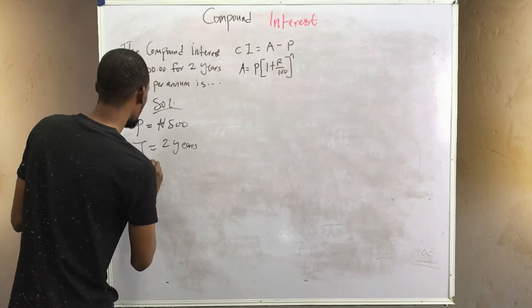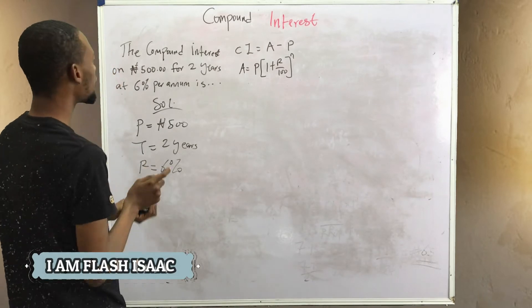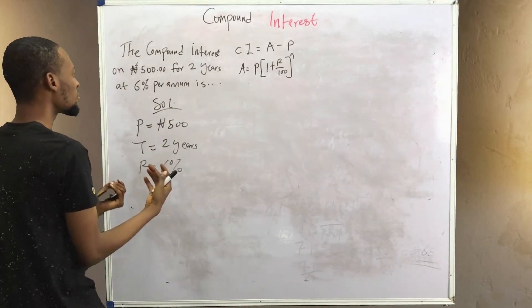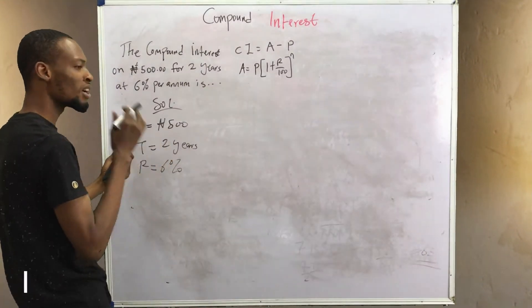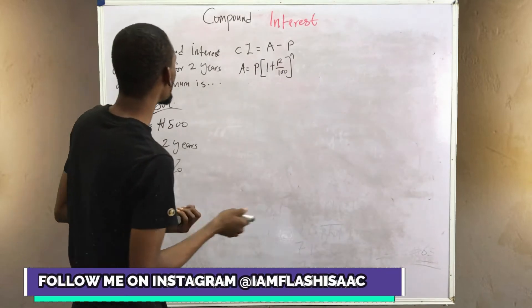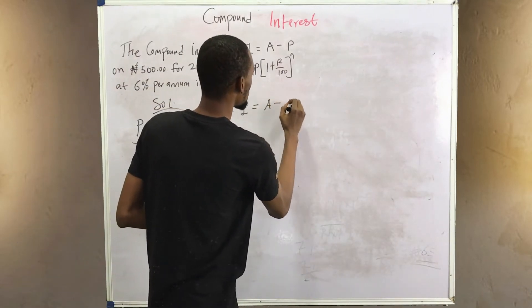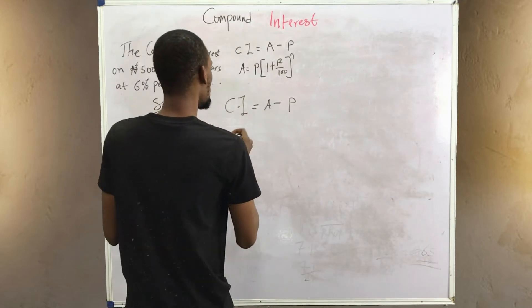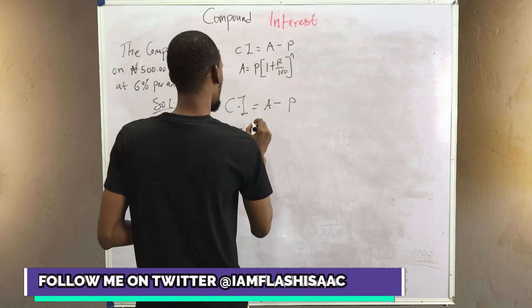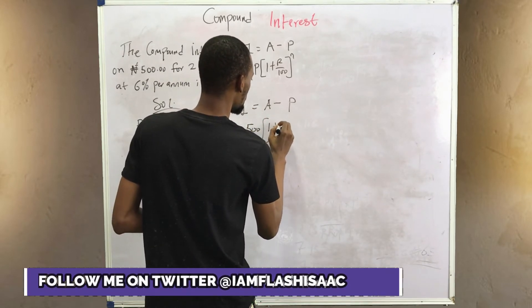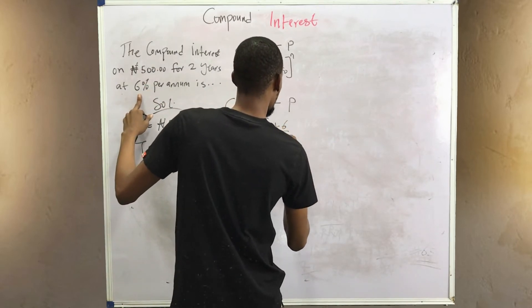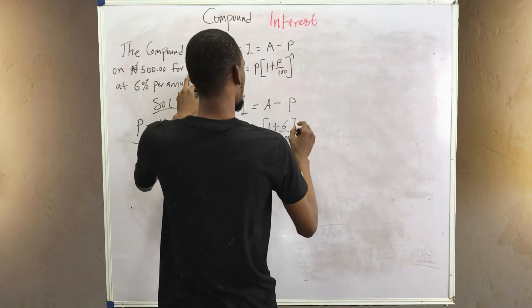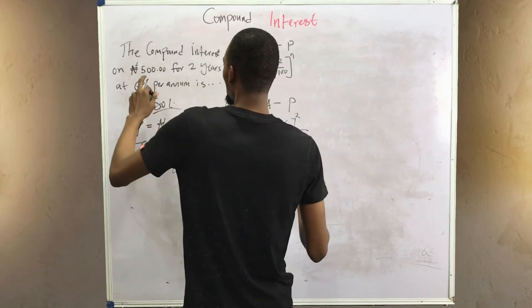If solving without a calculator, for the first year the amount is simply 500 naira plus six percent of 500 naira. But if you prefer the formula method: compound interest equals amount minus principal, where amount equals P times one plus r over 100 to the power n. Substituting: principal is 500 naira, interest rate is six percent, and n equals two years.